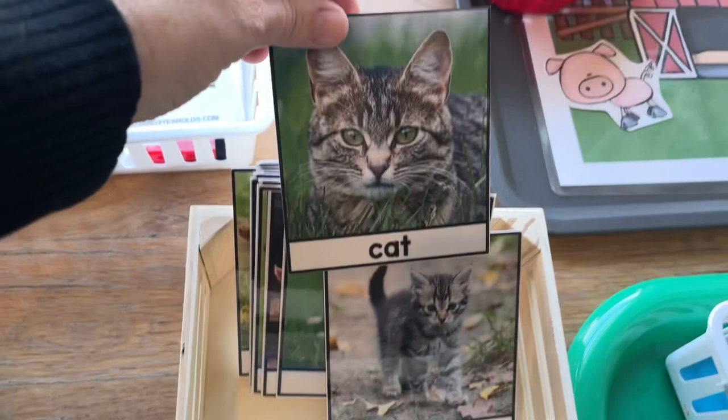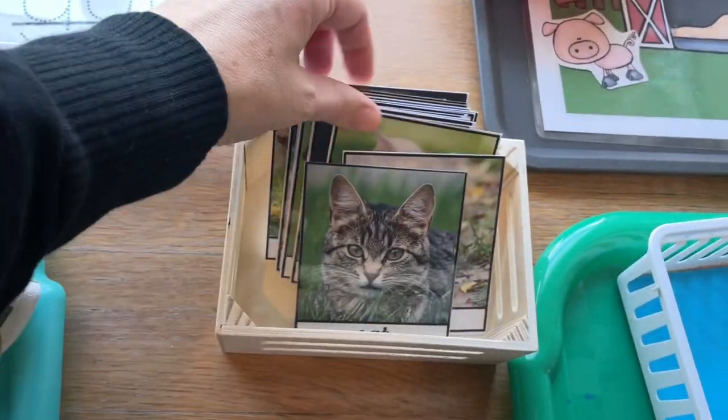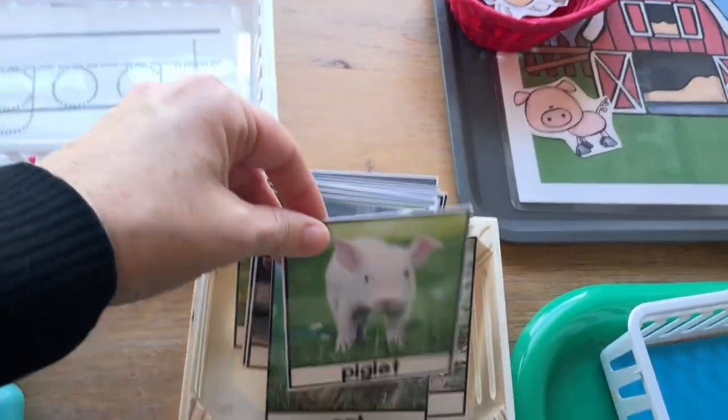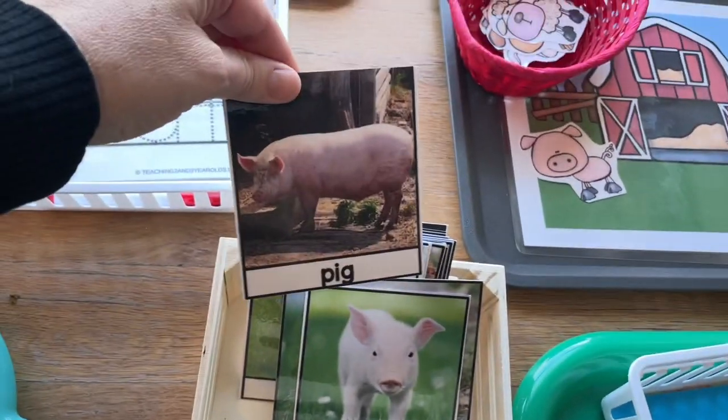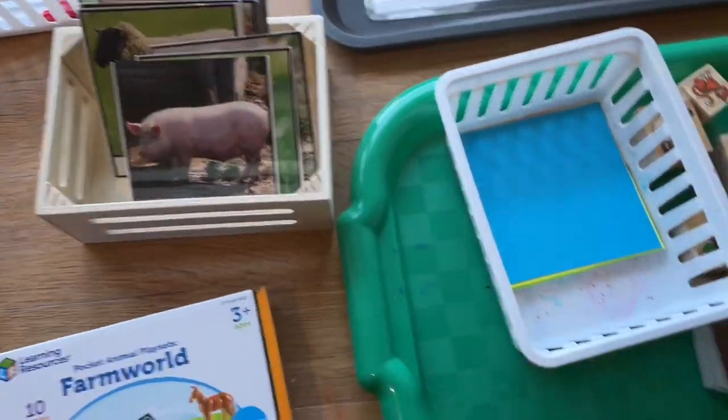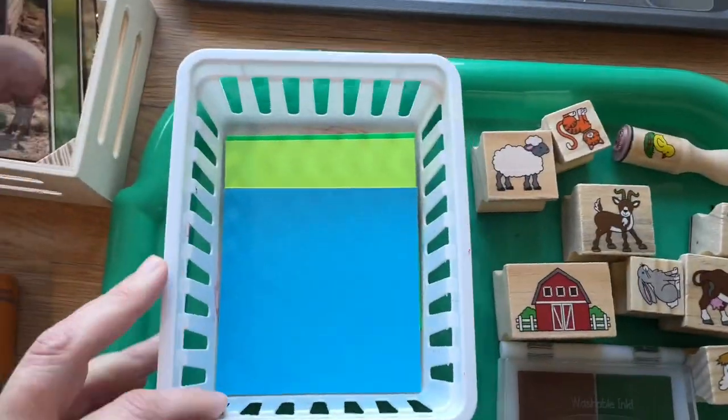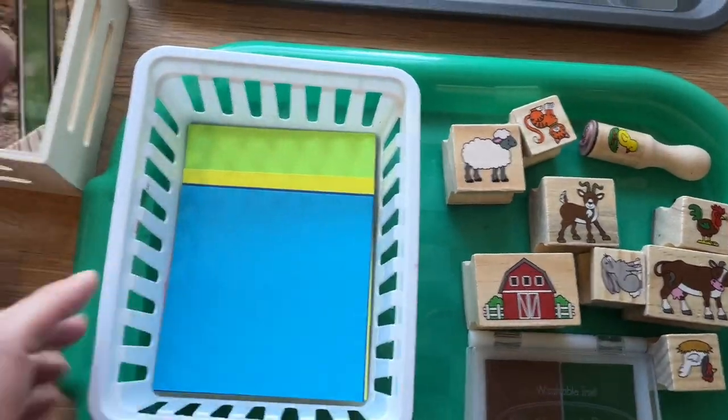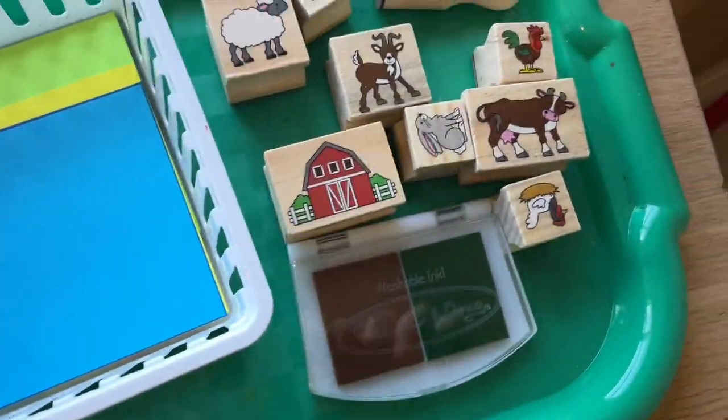Next, there are these picture cards where the animal baby gets matched up with the mother animal. I think they'll have a lot of fun with those. And then also I've got a little stamping tray set up, different farm animals to stamp on these little sheets of paper and a stamp pad.